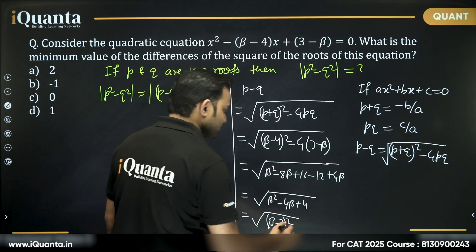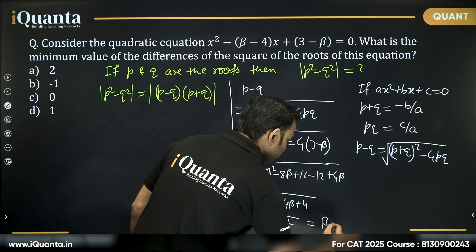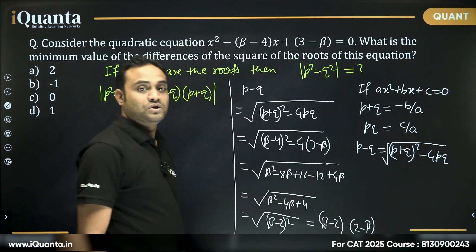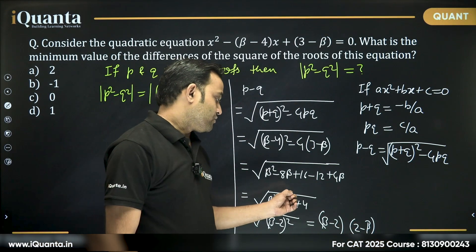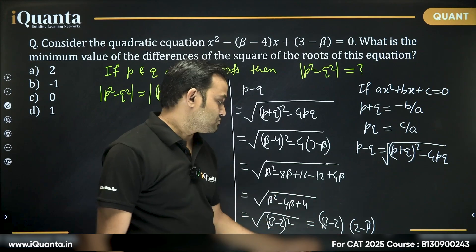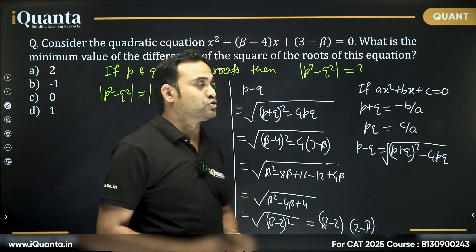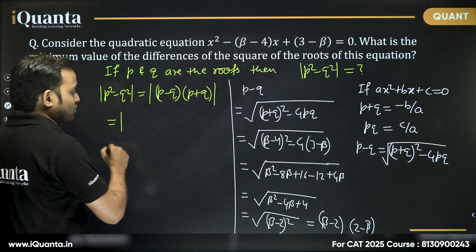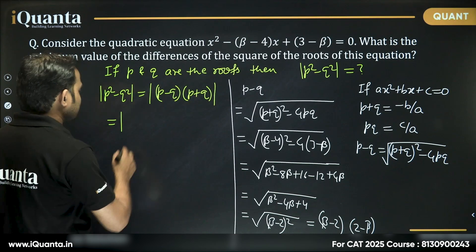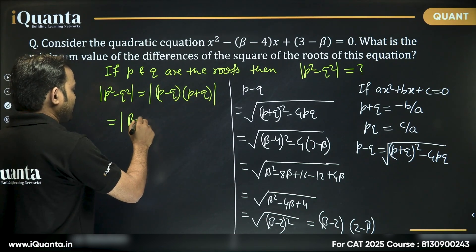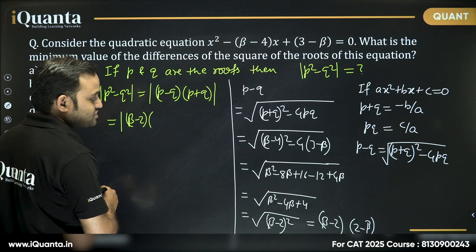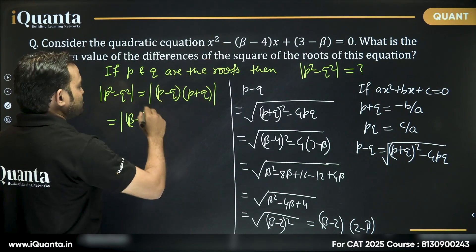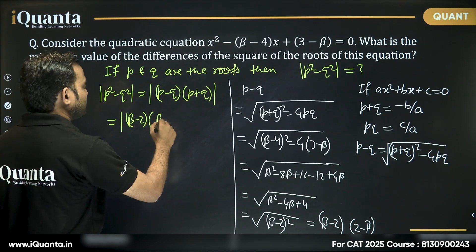That equals √(β − 2)². So this value could be (β − 2) or (2 − β). We do not know if β minus 2 is positive or 2 minus β is positive, so we have to consider both scenarios. In the first case, p minus q is (β − 2) and p plus q is (β − 4).